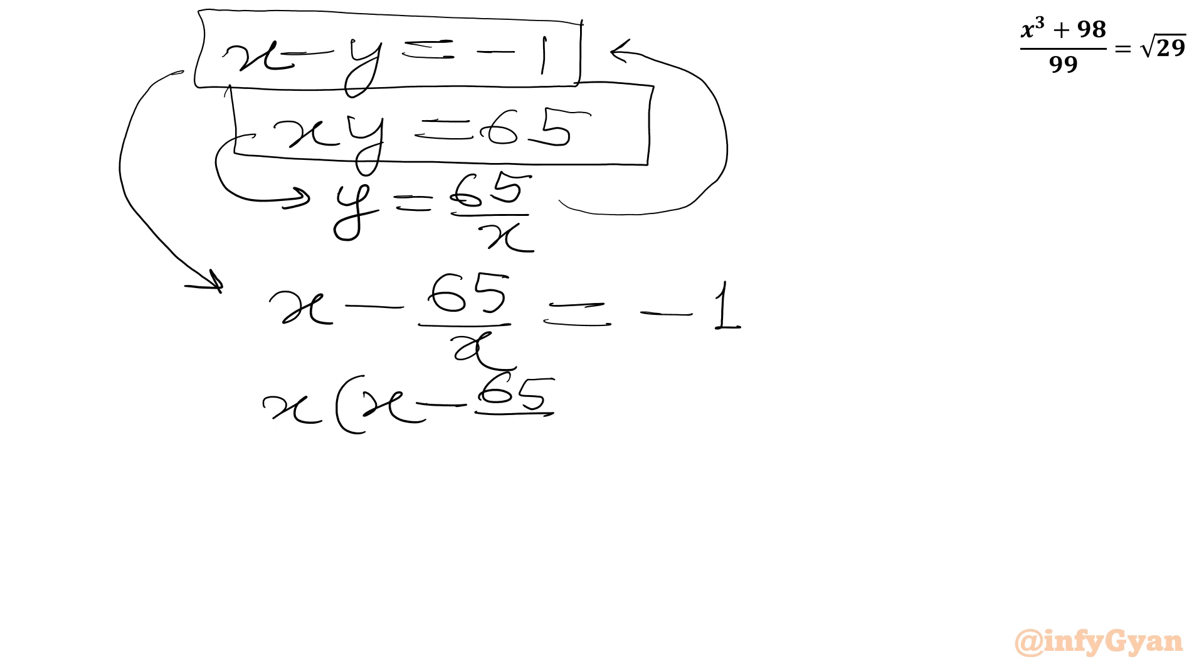Multiply both sides by x. So x times x minus 65 over x equals negative 1 times x. So x squared minus 65 equals negative x, or we can write x squared plus x minus 65 equals 0.